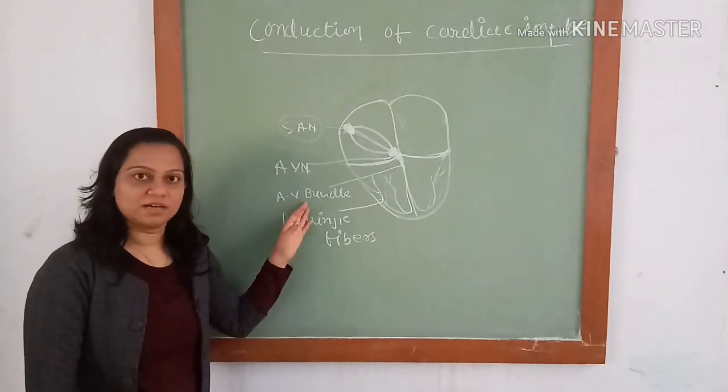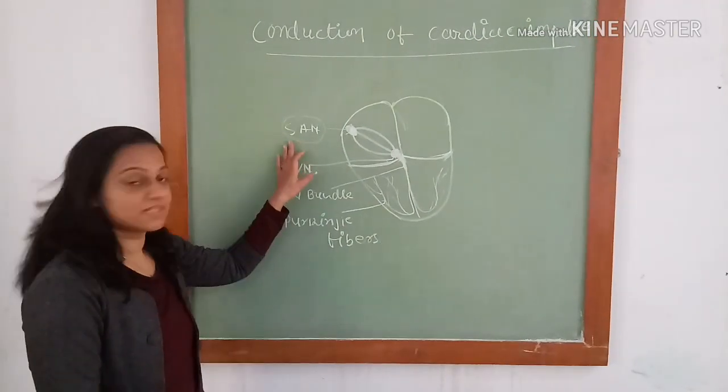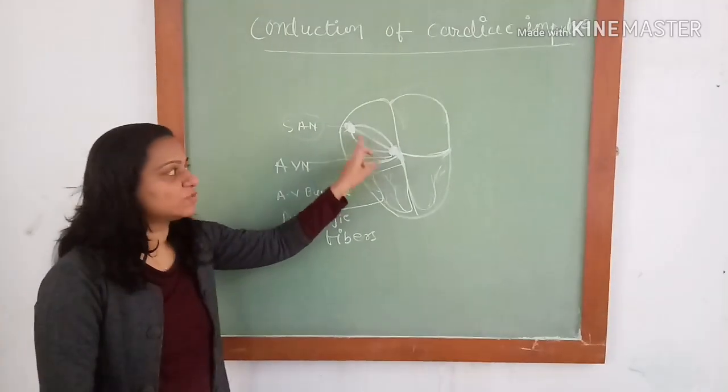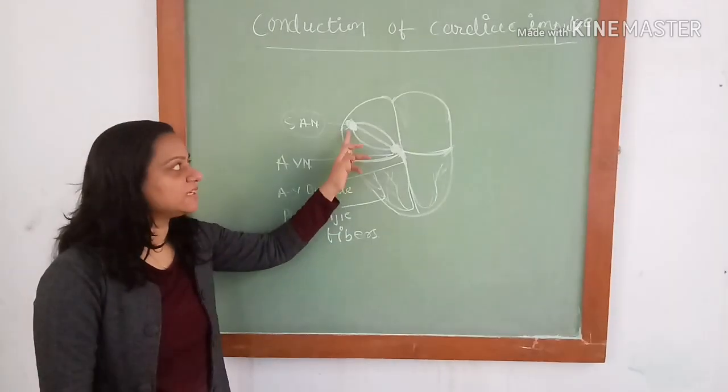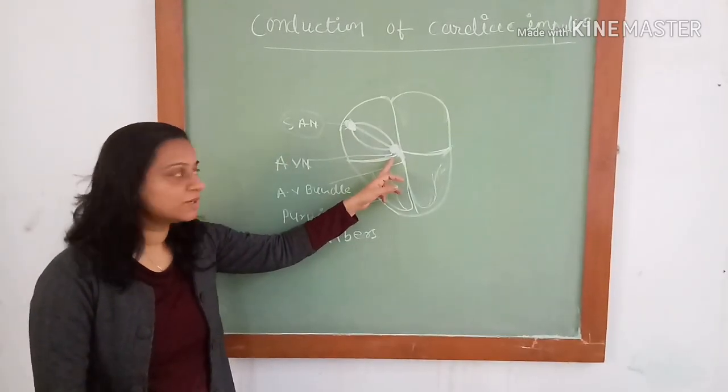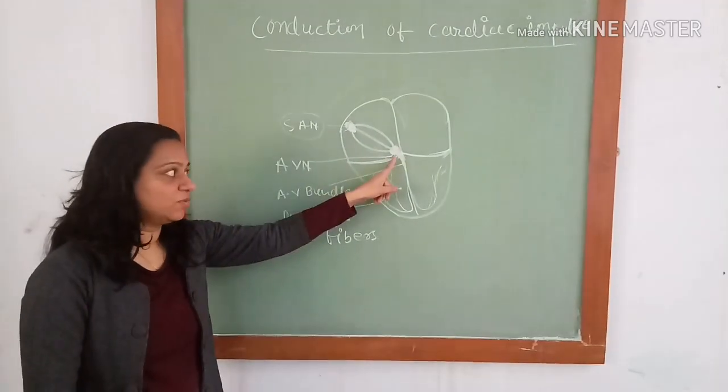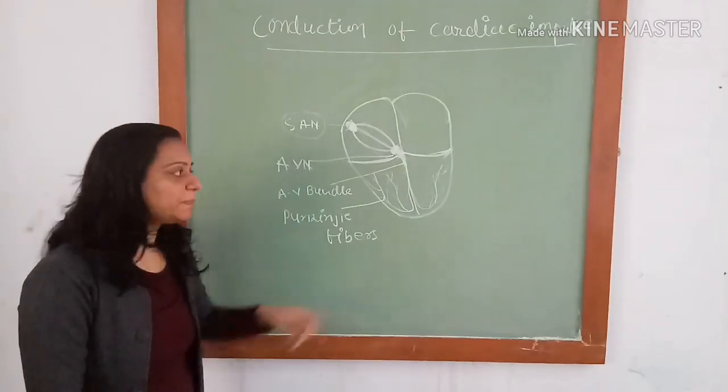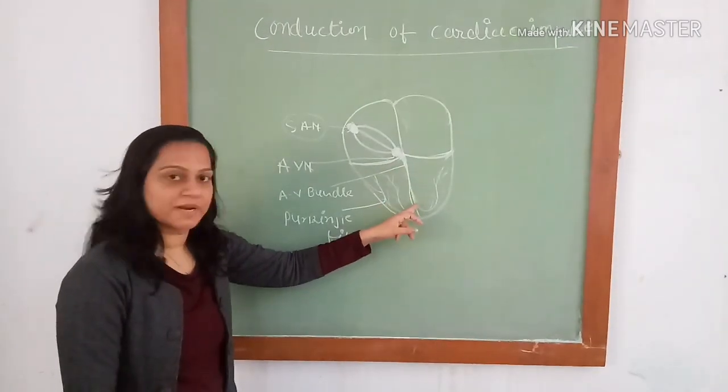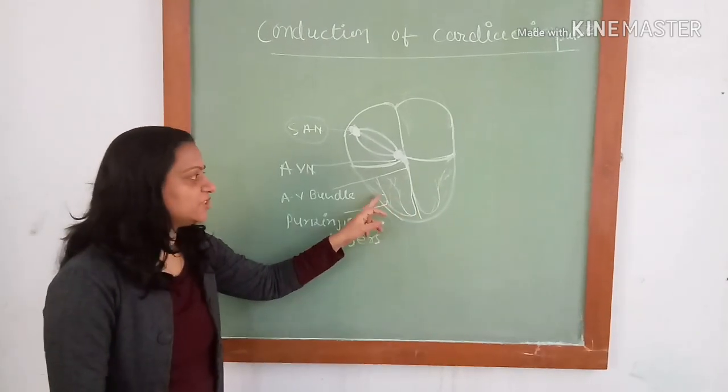The conducting system of the heart is formed of SA node, internodal tract (anterior, middle, and posterior) connecting SA node and AV node, then AV node, bundle of His also known as AV bundle, right and left branches, and Purkinje fibers.